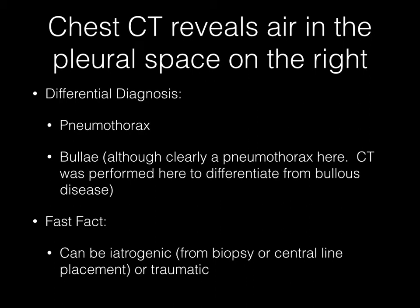Axial CT image of the chest reveals air in the right pleural space. The differential diagnosis here is pneumothorax, and this is clearly a pneumothorax, although bulla disease can also be added into the differential diagnosis.